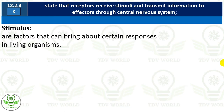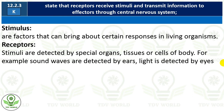Talking about stimulus: stimuli are factors that can bring about certain responses in living organisms. A stimulus can be in the form of cold, heat, or light — any factor that brings about a response inside the body. Receptors are special organs, tissues, or cells that can detect the stimulus, whether it is cold, hot, light, or sound waves.